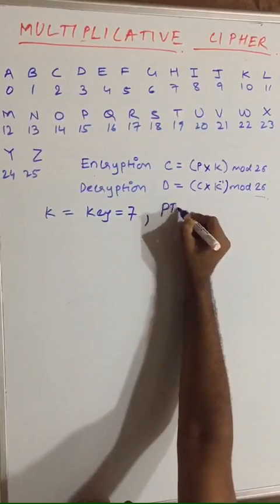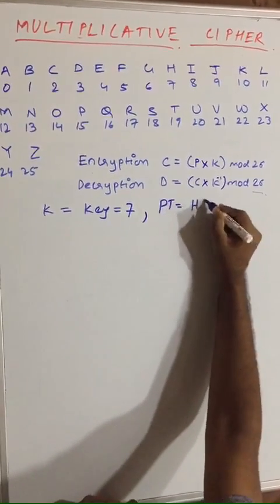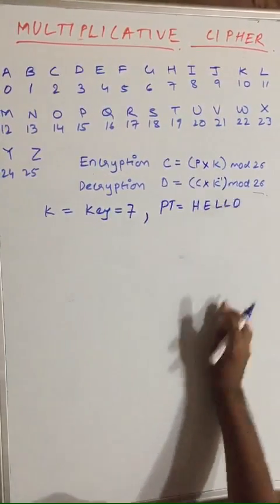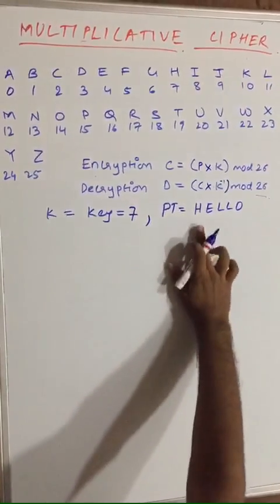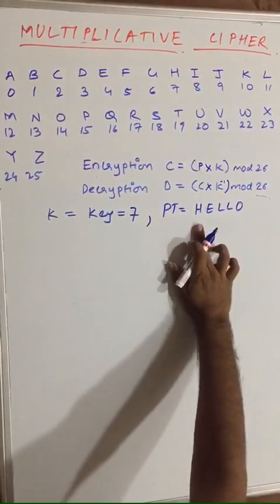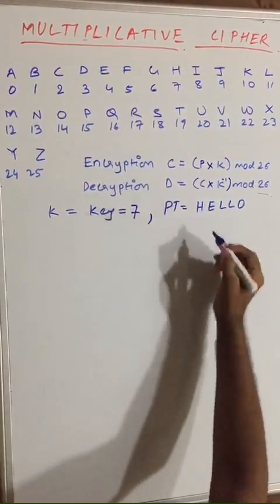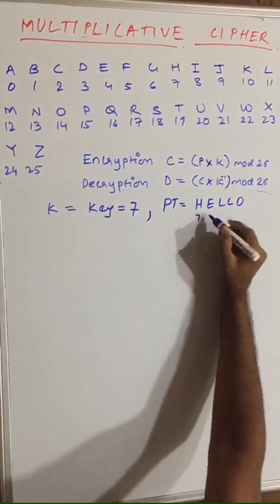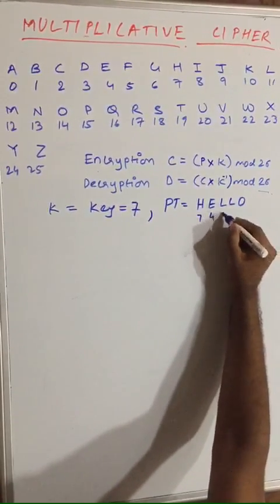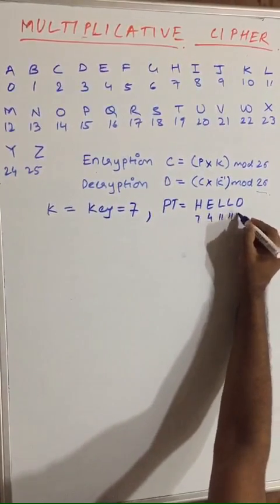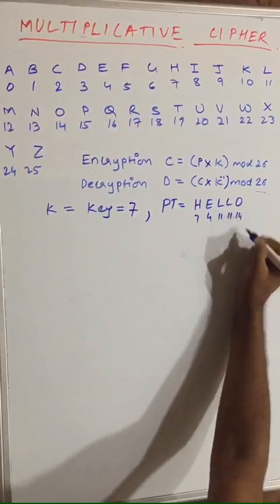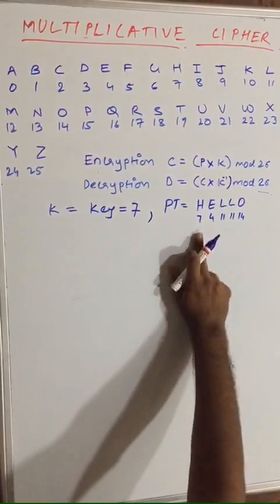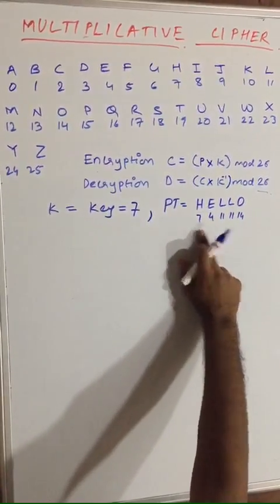Let us take plaintext P as 'hello'. First of all, write the corresponding digits related to 'hello': H is 7, E is 4, L is 11, and O is 14. Now let us apply the encryption algorithm on each of them.